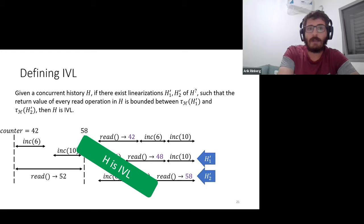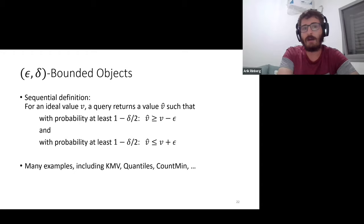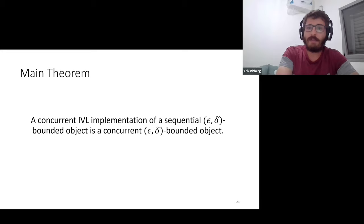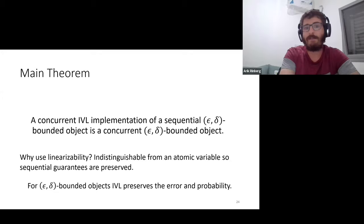This is good for data sketches, which are epsilon-delta bounded objects. We capture the semantics using the notion of epsilon-delta bounded objects, where such objects for an ideal value V return an estimate that's approximately correct with probability at least 1 minus delta. The main theorem we prove is that a concurrent IVL implementation of an epsilon-delta bounded object is itself an epsilon-delta bounded object—which is exactly what we need. IVL preserves the error probability from the sequential setting into the concurrent one. So IVL is sufficient for epsilon-delta bounded objects.